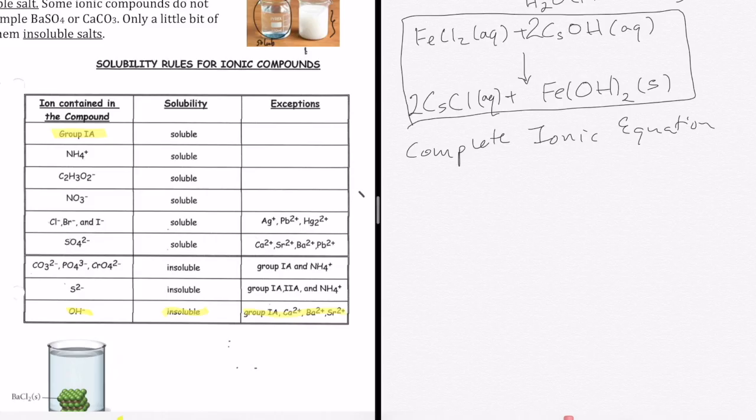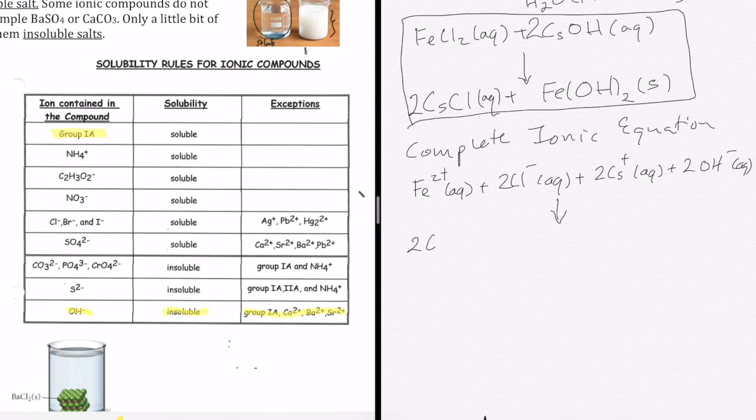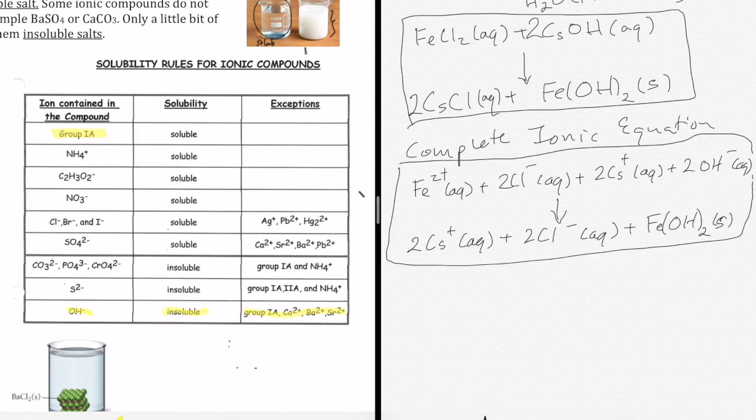Now I'm ready to do my complete ionic equation. I'm going to take anything that's aqueous and separate them out into ions and keep everything else together. I have FeCl2 aqueous, so I write Fe2+ aqueous and 2 Cl- aqueous. I have CsOH aqueous with a 2 in front as the coefficient, so that means I have 2 Cs+ and 2 OH- both aqueous. I have 2 CsCl aqueous, so that's 2 Cs+ aqueous and 2 Cl- aqueous. Lastly, I have Fe(OH)2, which is a solid.